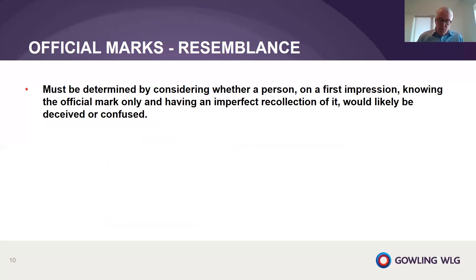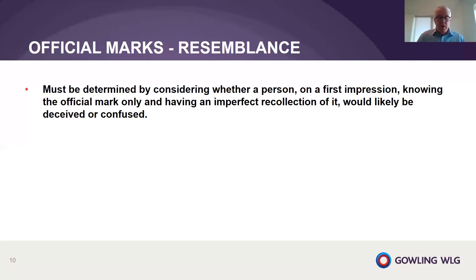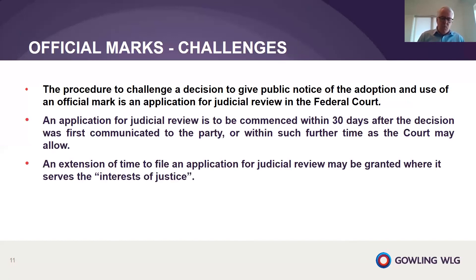Section 9 prohibits the adoption and use of any mark consisting of or so nearly resembling as to be likely to be mistaken for an official mark. The first point to keep in mind is that we're dealing with a comparison of the marks only — you do not take into account the goods and services, because the official mark is not limited to any goods or services, and the same is true with respect to the nature of the trade. Resemblance must be determined by considering whether a person on first impression, knowing the official mark only and having an imperfect recollection of it, would be likely to be deceived or confused. You look at the marks as a matter of first impression, taking into account that the first element of the mark may be the most important element for comparison.